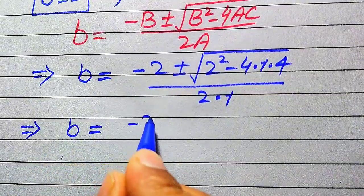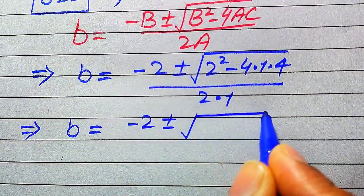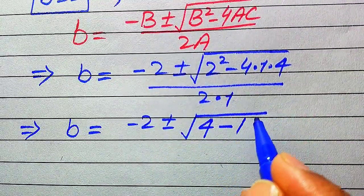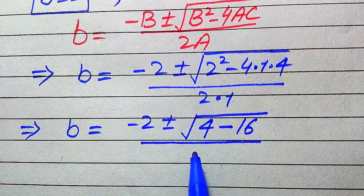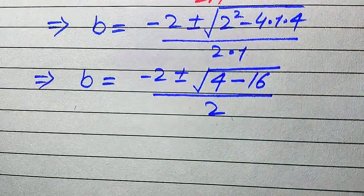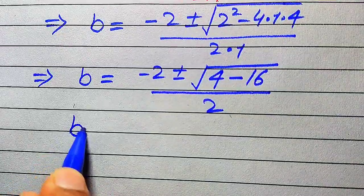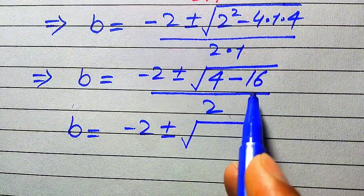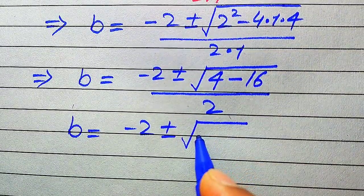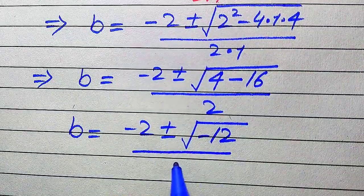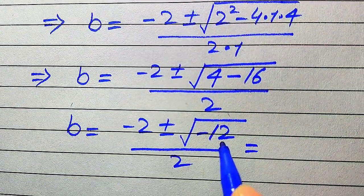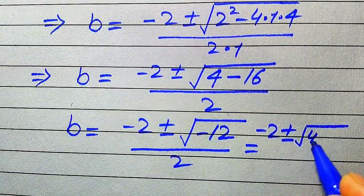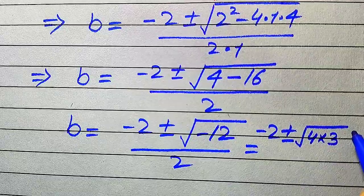Simplifying: this is minus 2 plus or minus square root of 4 minus 16, divided by 2. So we have b equals minus 2 plus or minus square root of negative 12, divided by 2. We focus inside the square root and break minus 12 as 4 multiplied by 3 multiplied by negative 1.